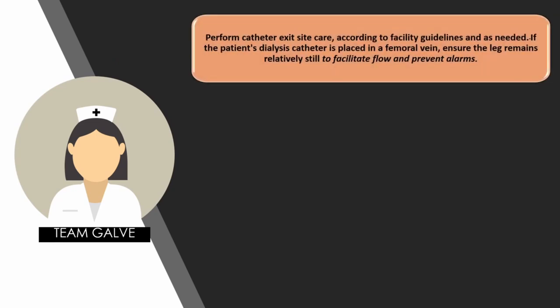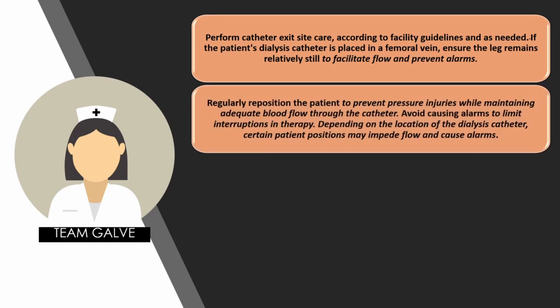Perform catheter exit site care according to facility guidelines and as needed. If the patient's dialysis catheter is placed in the femoral vein, ensure the leg remains relatively still to facilitate flow and prevent alarms. As mentioned, complete morning or afternoon care before starting CRRT — change diapers, change bedding, do everything you need to do before starting your CRRT to prevent alarms and promote good flow. Regularly reposition the patient to prevent pressure injuries while maintaining adequate blood flow through the catheter, and avoid causing alarms to limit interruptions in therapy.